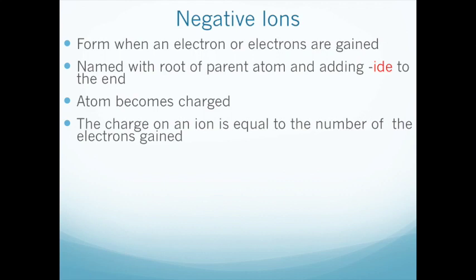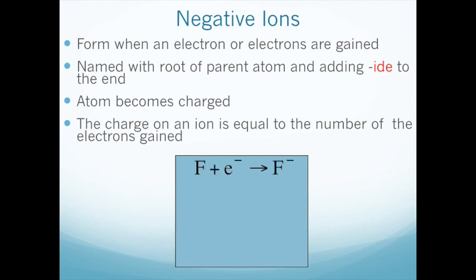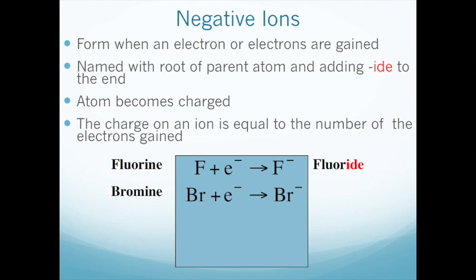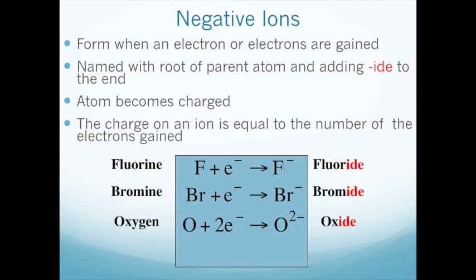Negative ions are the result of an electron being absorbed by an atom to give a net negative charge. These ions are named by using the root of the parent atom and adding -ide to the end. The total charge is equal to the number of electrons gained. For example: fluorine plus one electron yields the fluoride ion; bromine, another halogen, gains an electron to form bromide.